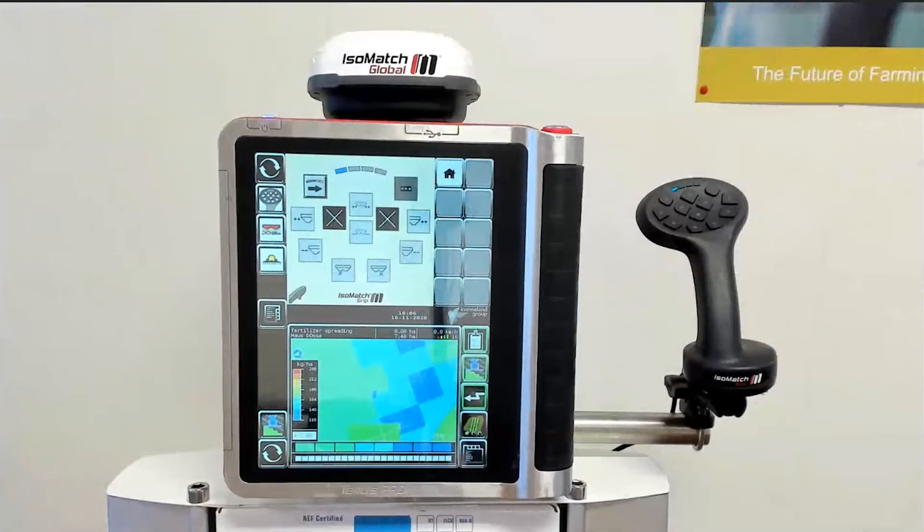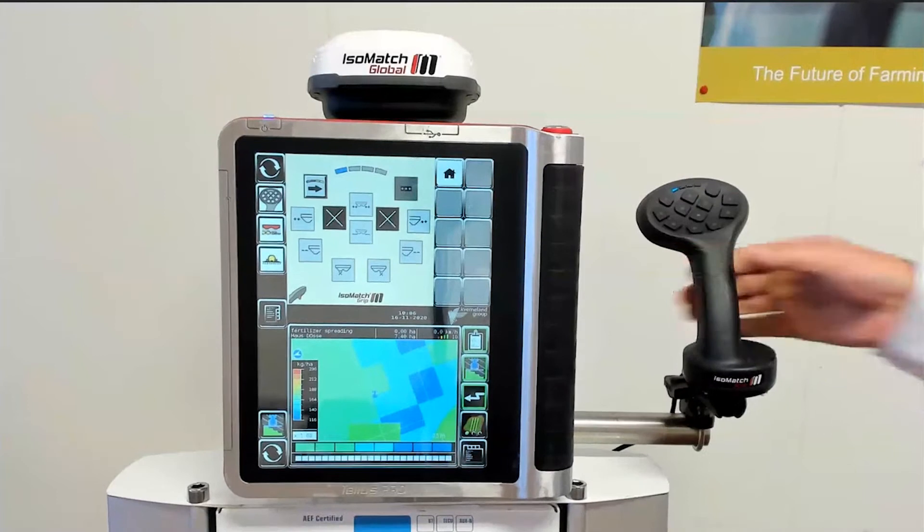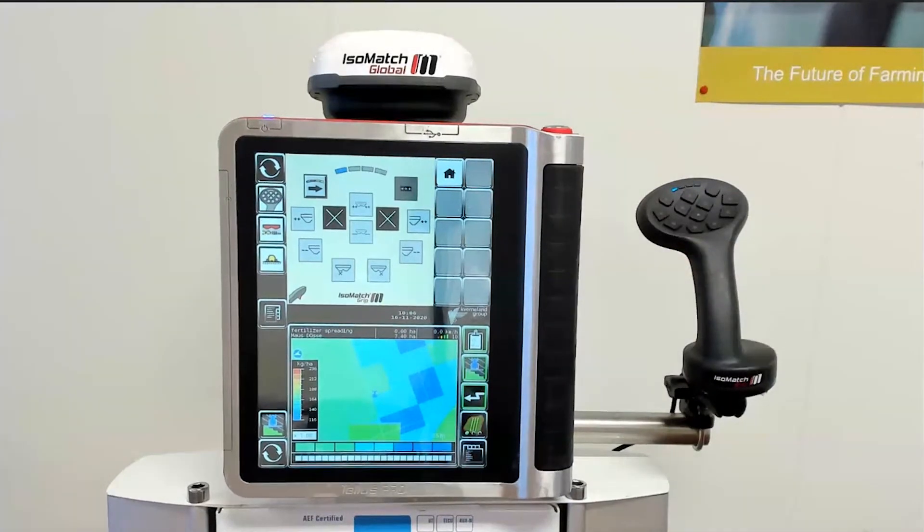Now let's go to the other accessory, the IsoMatch Grip. It's an auxiliary device, making the operation of implements easier for the farmer.